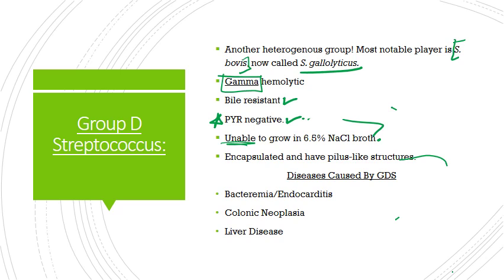Group D strep are encapsulated, and many — specifically S. gallolyticus — have a pilus-like structure. Because they're encapsulated, they're able to escape immune cells in the lamina propria, allowing them to get into the bloodstream and survive there. Once in the bloodstream, they use the pilus-like structure to adhere to surfaces, facilitating colonization of collagen-rich surfaces like the valve endothelium, which allows biofilm formation leading to disease.